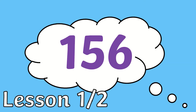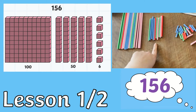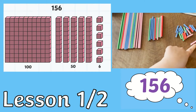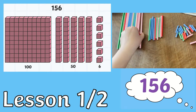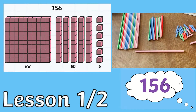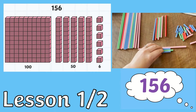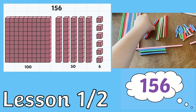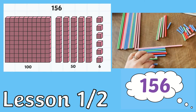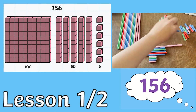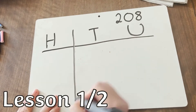Our first number is 156. Ask yourself: how many hundreds do we need, how many tens, and how many units? So we need 100, five tens, and six units or six ones. Great stuff! And you can check them by counting them out.